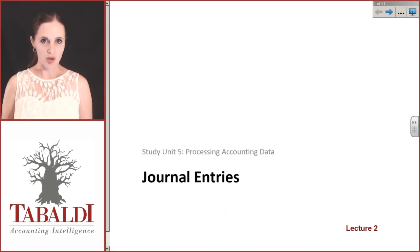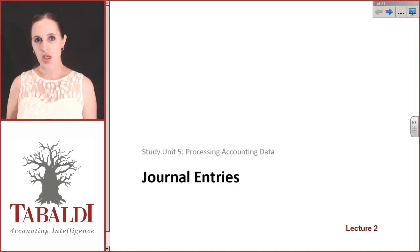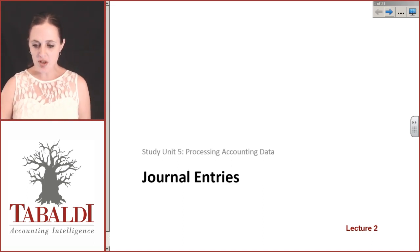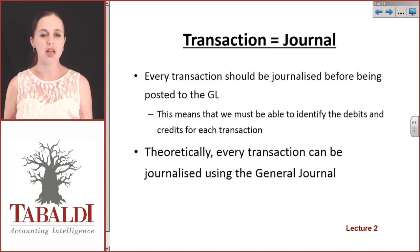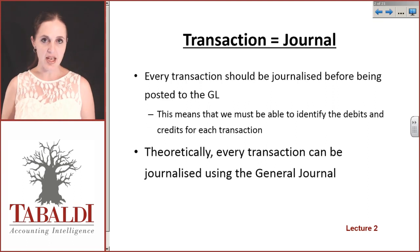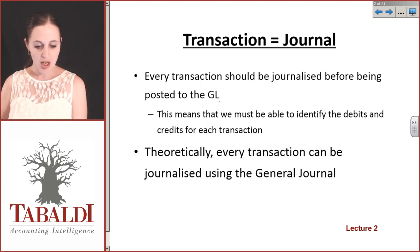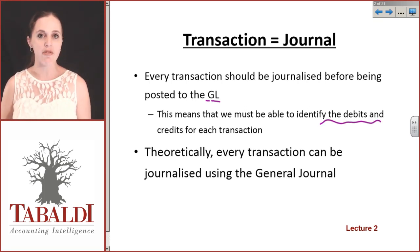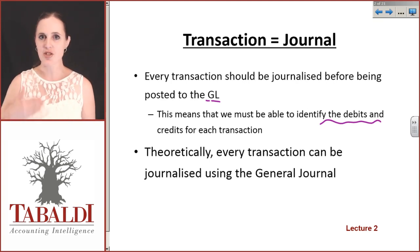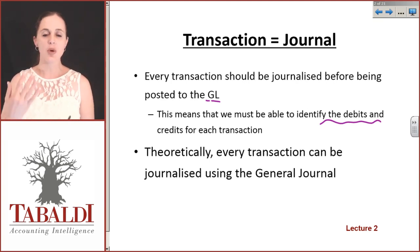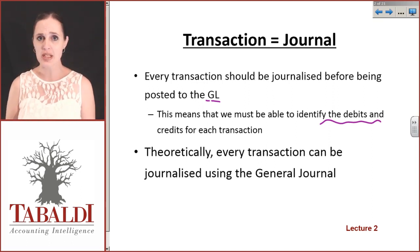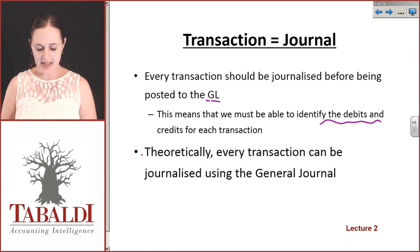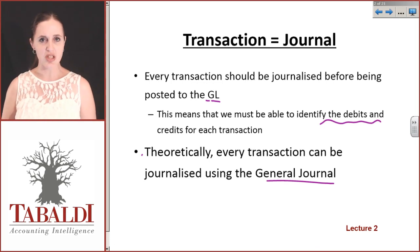Let's take a look at journal entries in general. We're going to start by looking at the general journal, because theoretically every single transaction and every single item that we put into the books could be brought in through a general journal. We've spoken already about the fact that every single transaction has to be journalized before being posted to the general ledger, and that means we have to be able to identify the debits and credits for every single transaction.